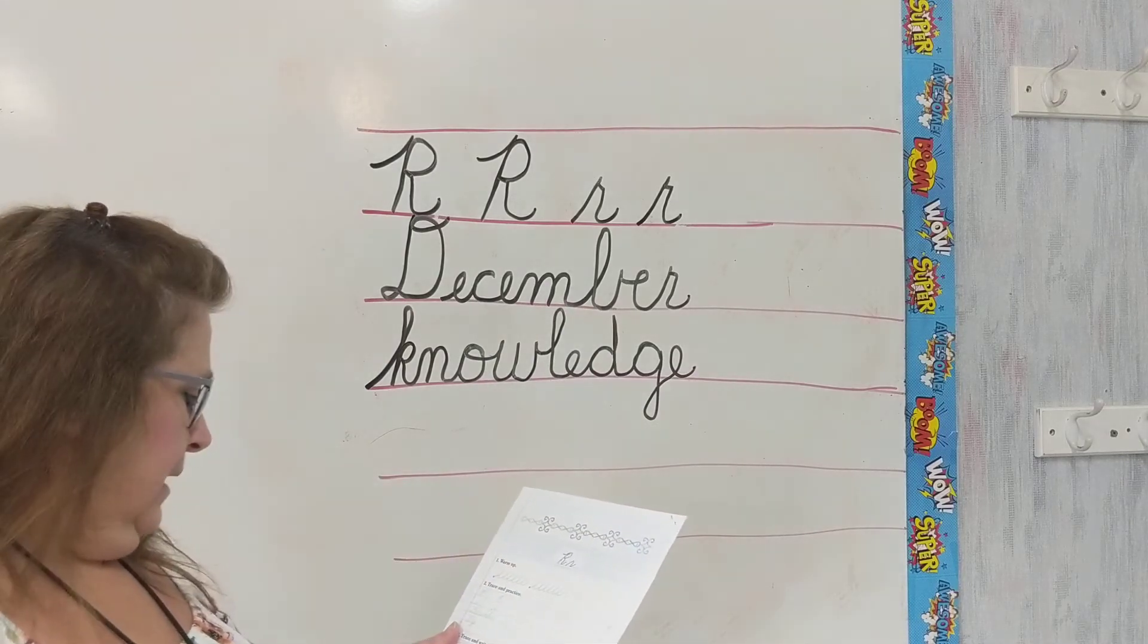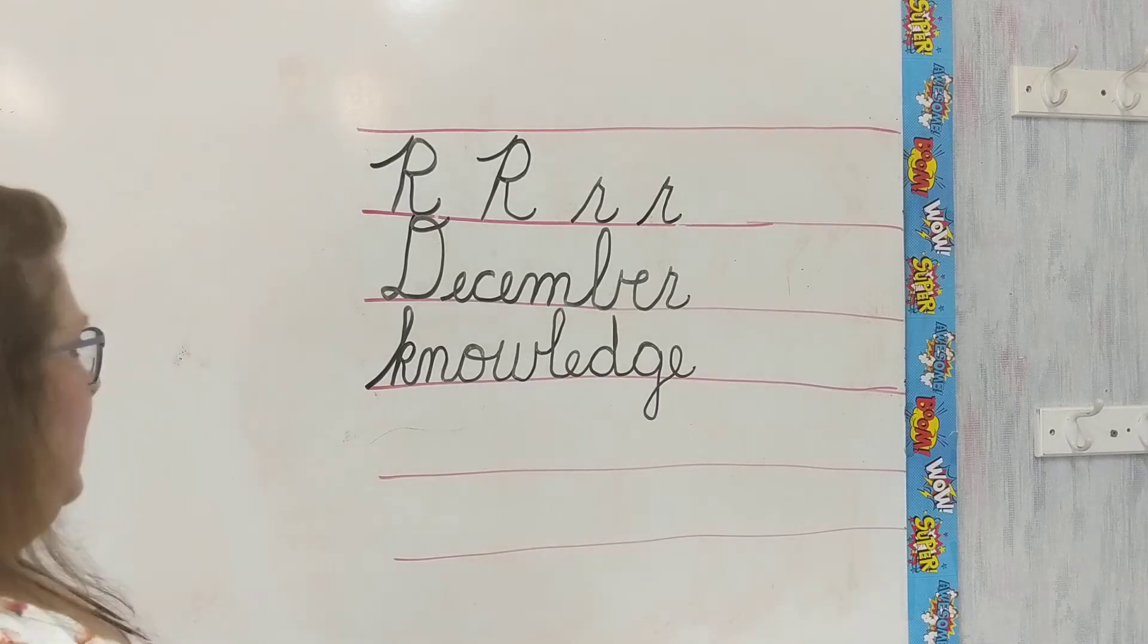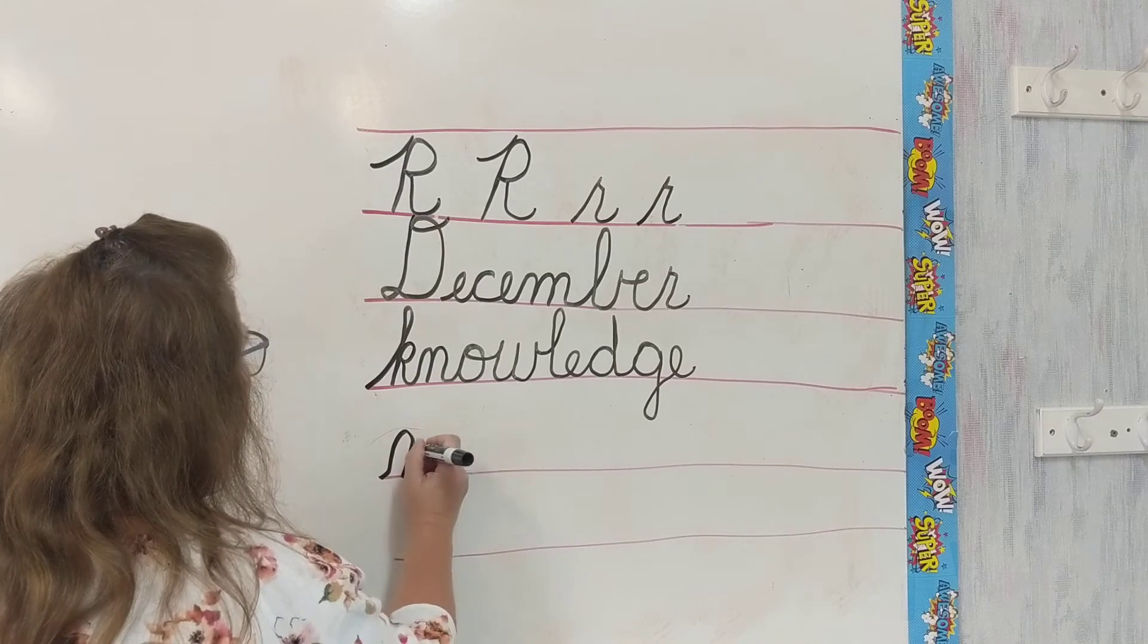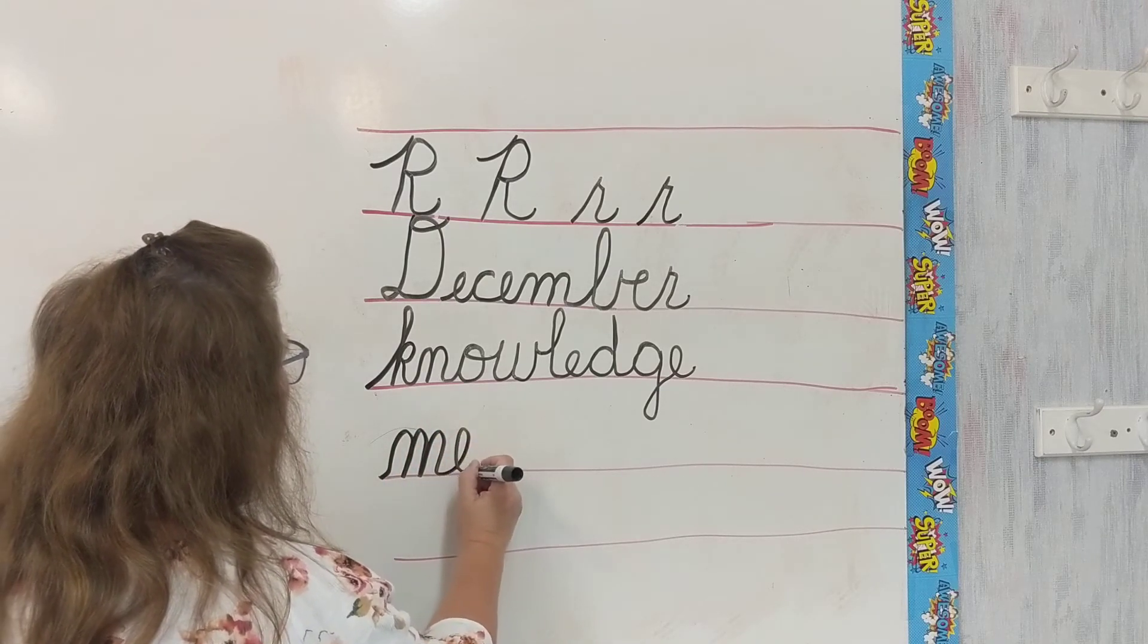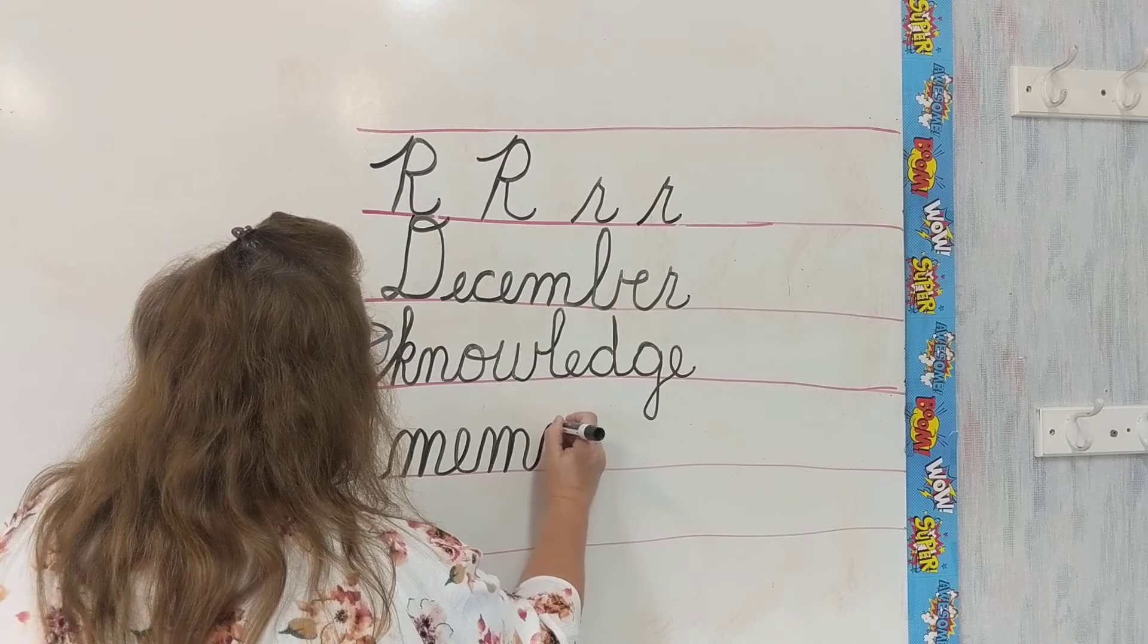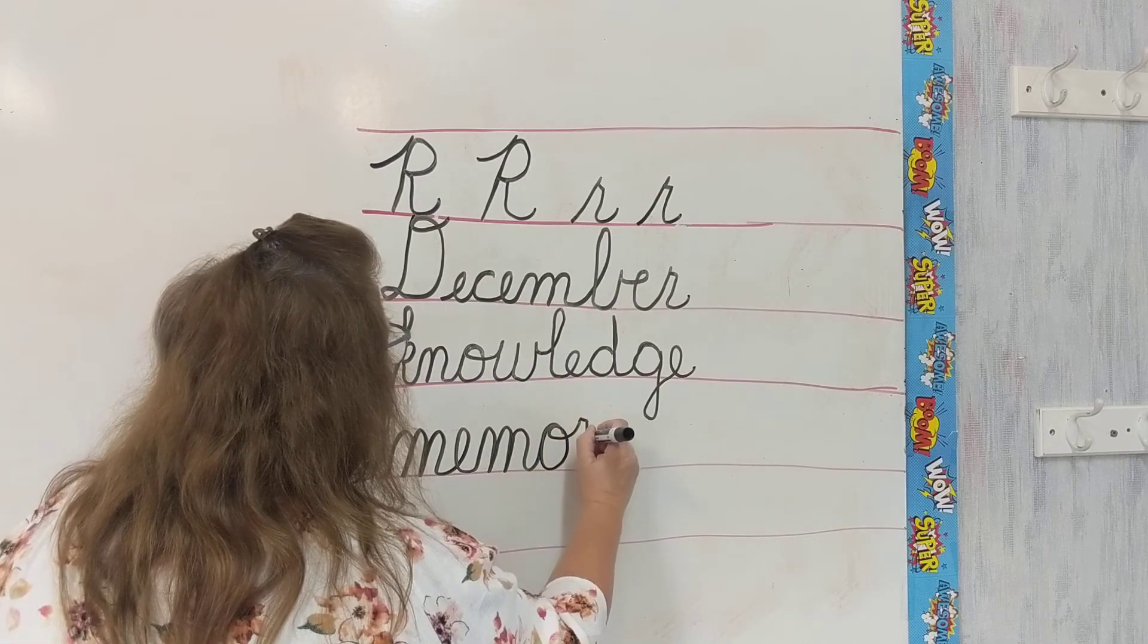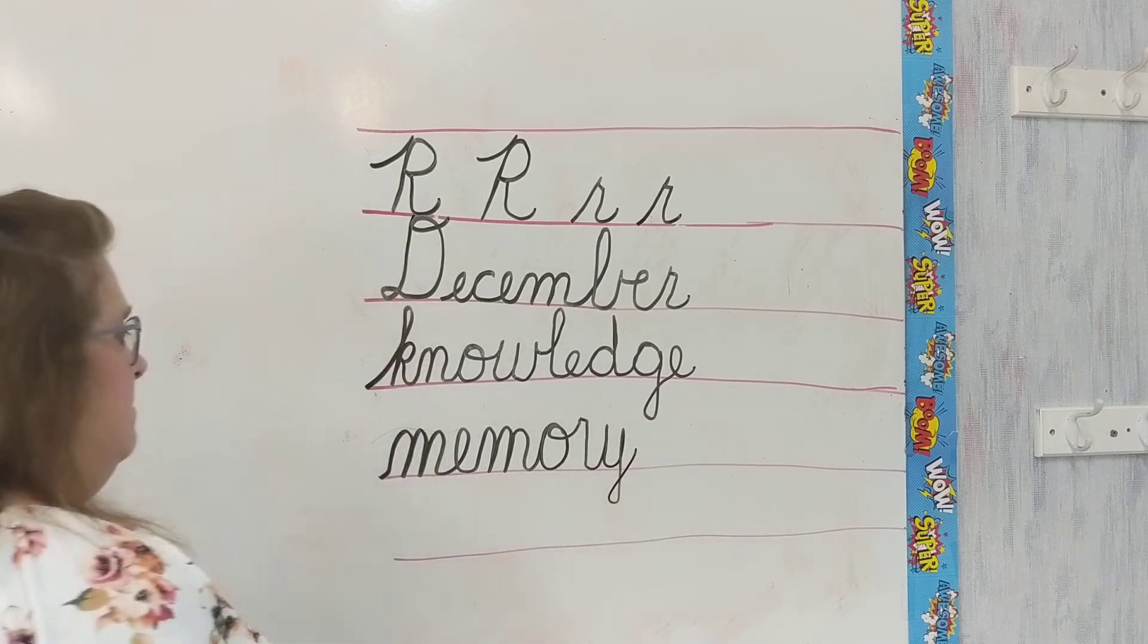And then let's do the word memory. You'll be writing the word memory today. So we come up with our three humps on our M. M-E. I'm looping. I'm leaving room when I come out for my letters. M-O. Retrace back around. Close it up. Swing out for my R. My R will be in the air. And Y. Memory.